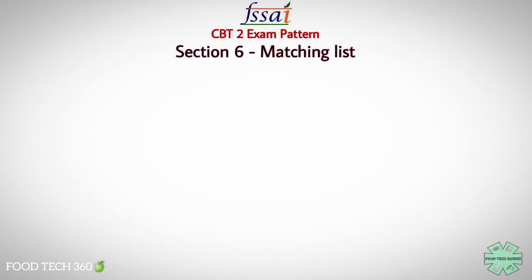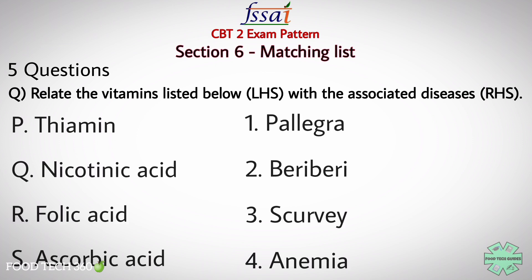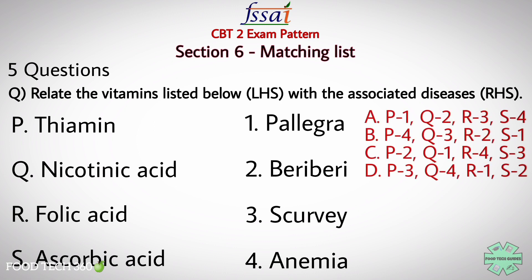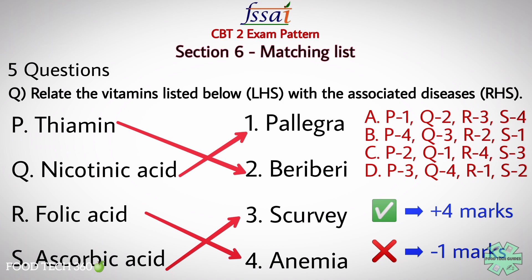The final section, Section 6, is Matching List — 5 questions will be asked. Example: 'Relate the vitamins listed below and associated diseases.' Left side: P) Thiamine, Q) Niacin, R) Folic acid, S) Ascorbic acid. Right side: 1) Pellagra, 2) Beriberi, 3) Scurvy, 4) Anemia. The correct answer is C — P to 2, Q to 1, R to 4, S to 3. Plus 4 marks for each correct answer and minus 1 for each wrong answer.